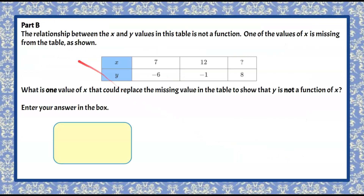Let's move on to part B. The relationship between the x and y values in this table is not a function. One of the x values is missing from the table. We're asked: what is one value of x that could replace the missing value to show that y is not a function of x? Pause and think about this, then come back to check your solution.